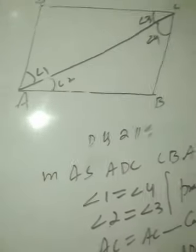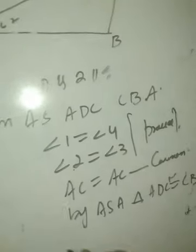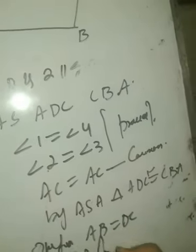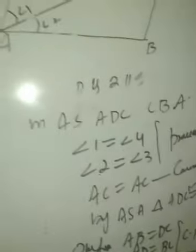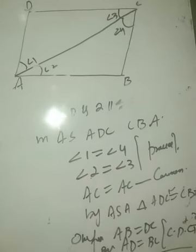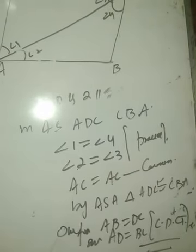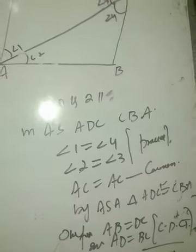When two triangles are congruent, corresponding parts are equal. Therefore AB equals DC and AD equals BC, by CPCT. This was the theorem we were supposed to prove. I hope you all understand it. If you still find any difficulty or have any doubt regarding this theorem, please let me know and I can explain it to you. Thank you.